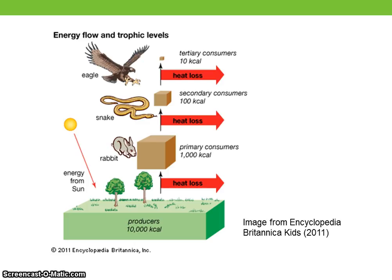A food chain is a descriptive diagram that represents the flow of energy from prey, the consumed, to predator, the consumer. Feeding relationships in nature are more complex than food chains and include an array of linkages among primary producers and consumers.